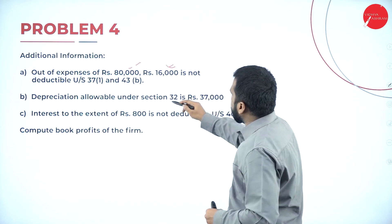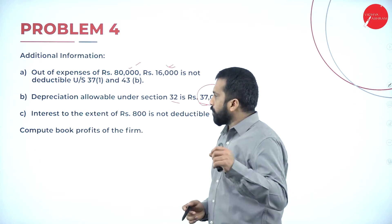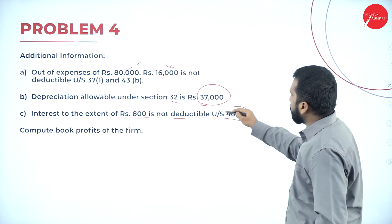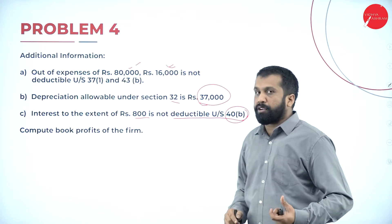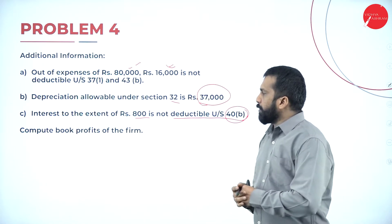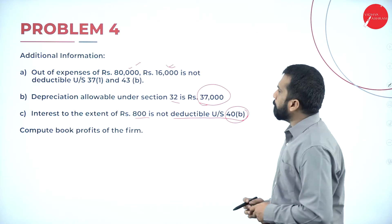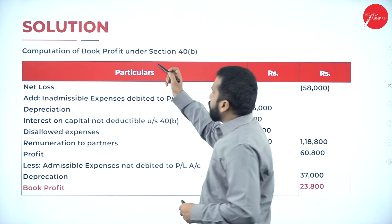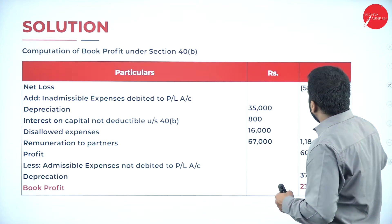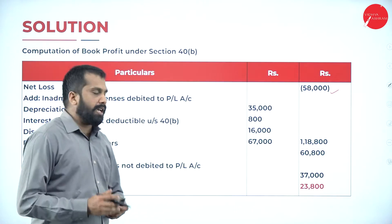Depreciation allowable under section 32 is rupees 37,000. Next, interest to the extent of 800 is not deductible under section 40B. Remember your remuneration calculation. Then compute book profit of the firm. Computation of book profit under section 40 subsection B: first, net loss. What is the net loss? Net loss we have is 58,000 — it is already given.